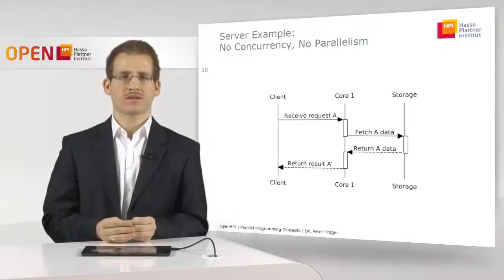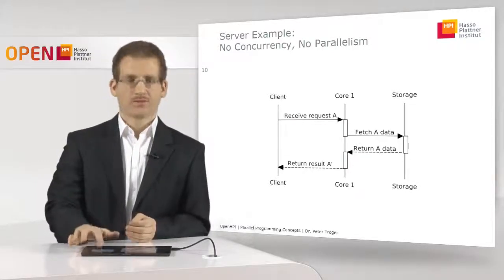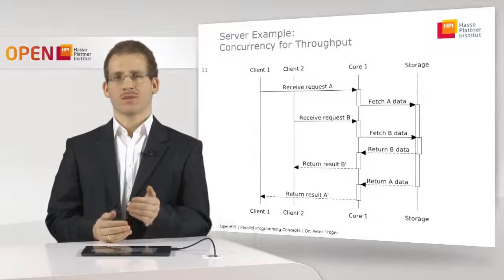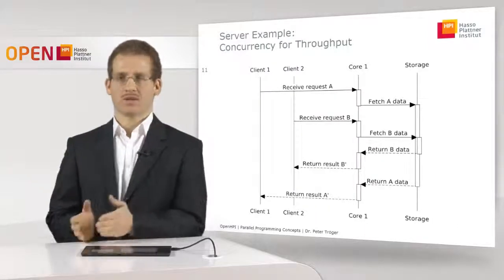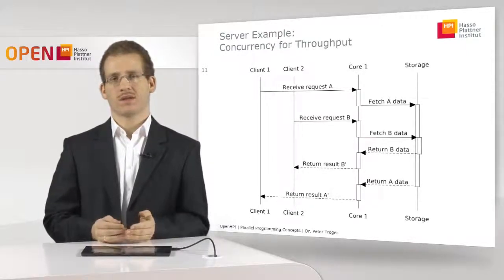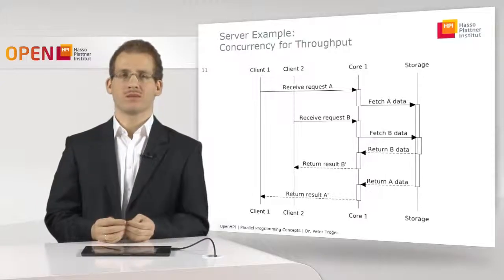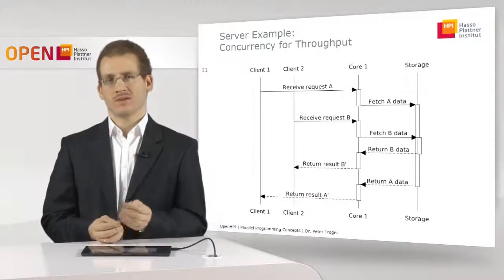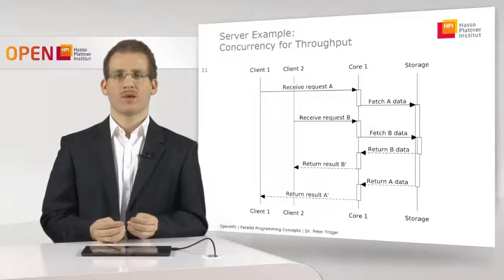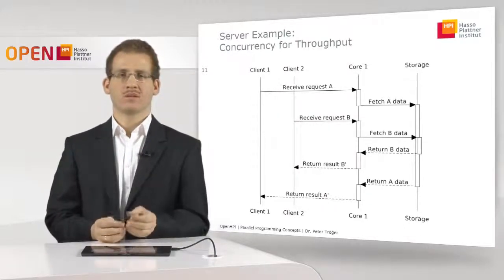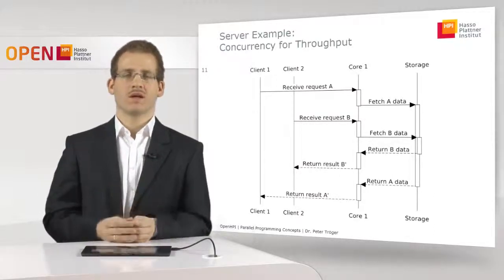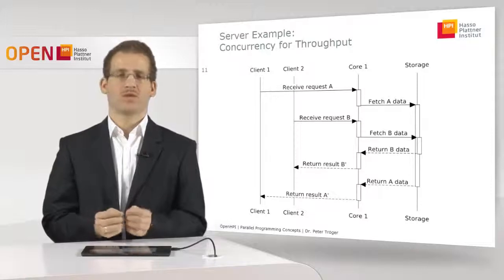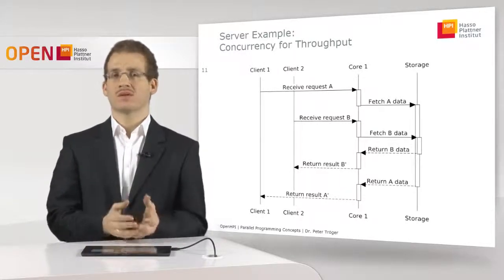The first idea we can apply is concurrency — using concurrency for throughput by supporting multiple clients at the same time, even though the server still has only one core and one storage. The first client sends request A while the second client sends request B. Due to the fact that request A is still in the phase where storage data is being read, the core can spend that waiting time to deal with the new incoming request. What you get is an interleaving of different request processings, exploiting the time between actual computations when you are waiting for the I/O and storage system.